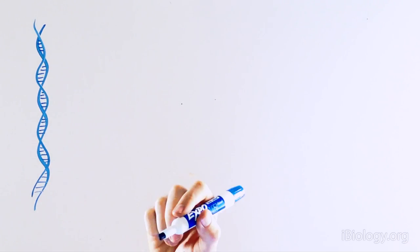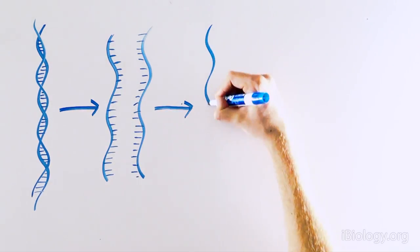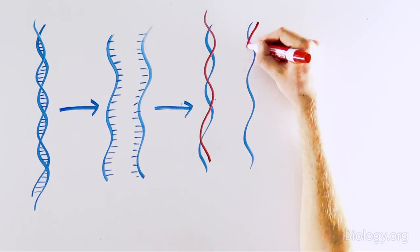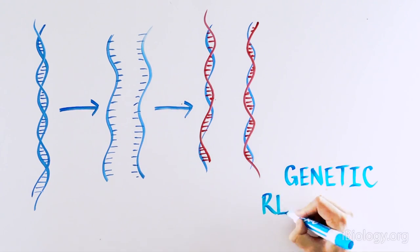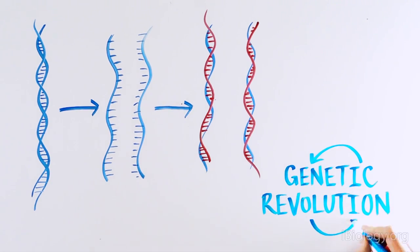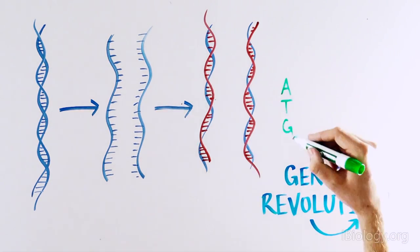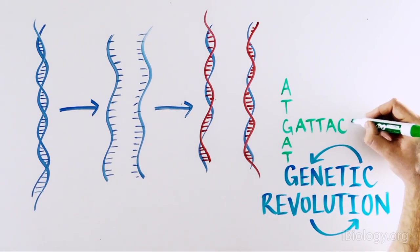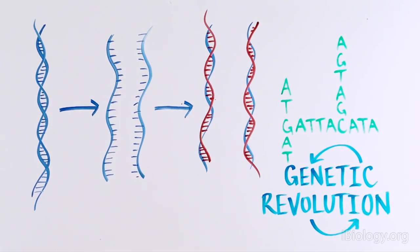By discovering that two strands of DNA can separate and provide the template for the production of two new strands, Meselson and Stahl revolutionized genetics. Scientists were very skeptical that this was even possible, but Meselson and Stahl proved it with a beautifully designed experiment.